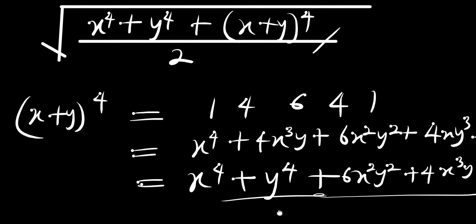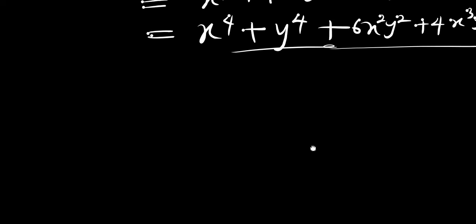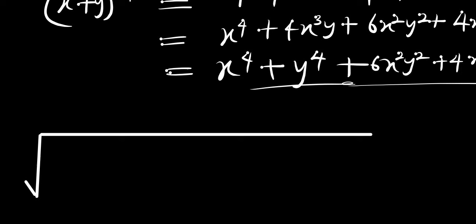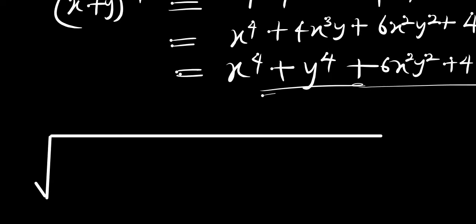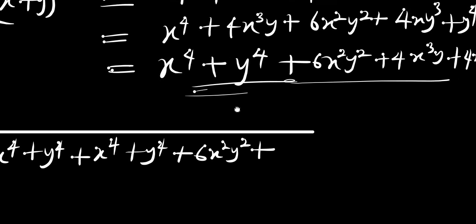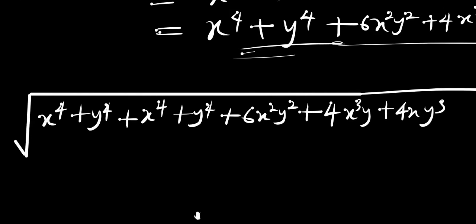That being done, the next thing is to substitute this into our square root. So we are going to have the square root of x power 4 plus y power 4, plus the whole expansion: x power 4 plus y power 4 plus 6x squared y squared plus 4x cubed times y plus 4xy power 3, and everything here is divided by 2.